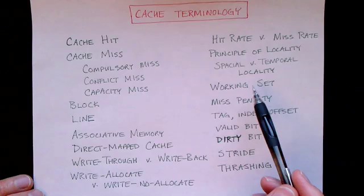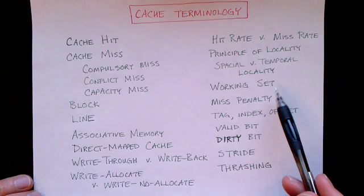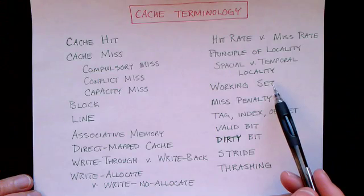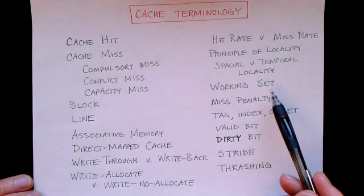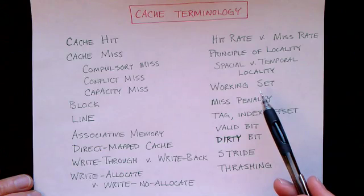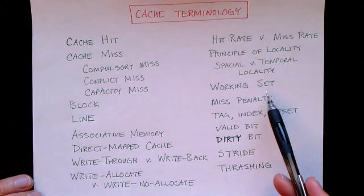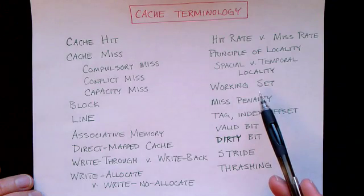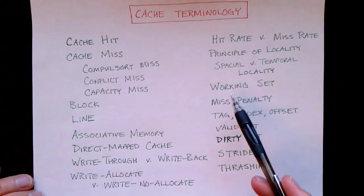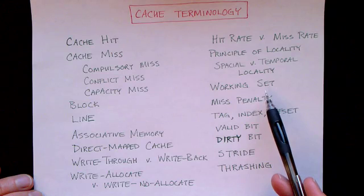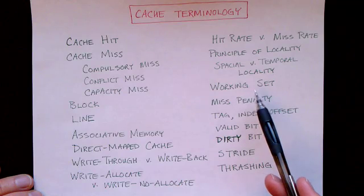We talked about the working set. When a program is running in a particular section of its execution, it's going to need some instructions and some data in memory. It may not need all of the instructions or all of the data, but over a short interval of the program's execution, some bytes are needed and other bytes are not. If we can get the working set into cache, then access to those bytes will be fast. If we cannot get the working set into cache, the program will have to go out to main memory and run more slowly.